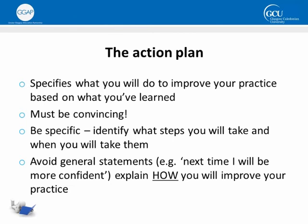The final part of Gibbs' cycle is the action plan. This is where you'll develop a plan that will help you take what you've learned from the experience and use it to improve your practice. The key is to convince the reader that you really are willing to learn from the experience, and to do that you need to come up with an action plan that lays out the specific steps that you're going to take and when you're going to take them. A common mistake is to say that you'll be more confident next time or less anxious next time — these kinds of statements are too general and not very convincing. What the reader really wants to know is how you will be more confident or less anxious, so you need to think hard about what things you could do to help you achieve this.